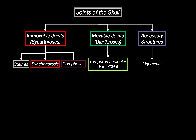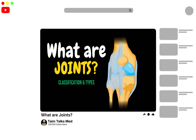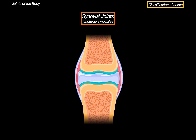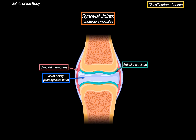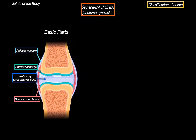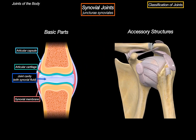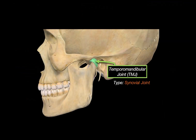Let's move on to the one movable joint in the skull: the temporomandibular joint, or TMJ. Synovial joints have a synovial cavity filled with synovial fluid, articular cartilage covering the surfaces, an inner synovial membrane, and are surrounded by a capsule. They also include accessory structures like ligaments, discs, and bursae. The temporomandibular joint is also a synovial joint that contains these structures.